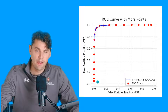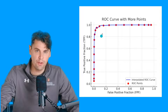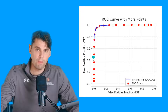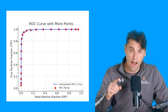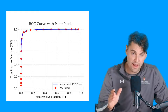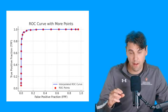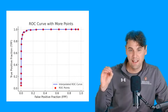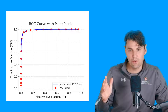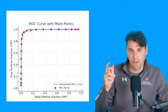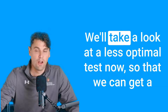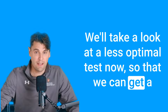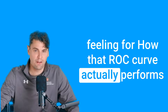If we put all those points together, we get a full ROC plot. For each threshold, that was a separate point, and adding more points defines the complete curve — where sensitivity is on the y-axis, reflecting how well we're detecting true abnormalities, and one minus the specificity is on the x-axis, reflecting how well we're classifying true normal cases. This ROC curve actually looks pretty good. We'll now look at a less optimal test to get a feeling for how that ROC curve performs.